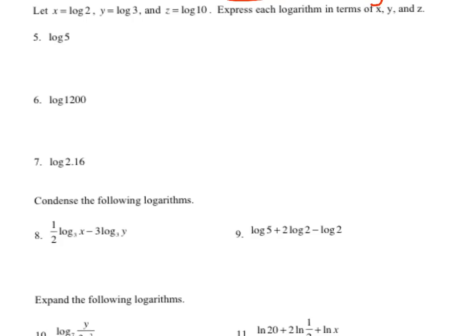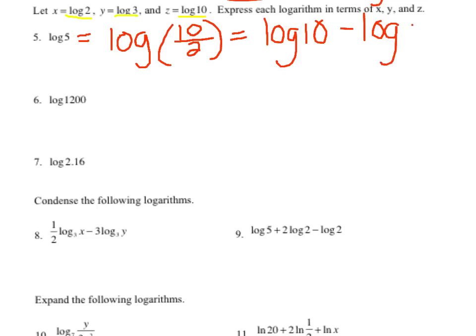Numbers 5, 6, and 7 are probably the toughest problems. The key thing is that I need to get everything in terms of log of 2, log of 3, and log of 10. It says x equals log of 2 — not x equals 2. So I need to think: can I rewrite log of 5 in terms of 2, 3, and 10? I'm going to think of 5 as 10 divided by 2. So this becomes log of 10 minus log of 2, which is subtraction because of division. I can then substitute in my variables and get z minus x.